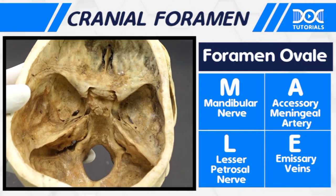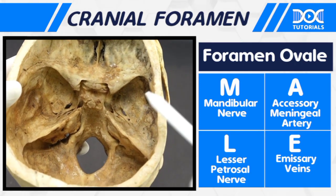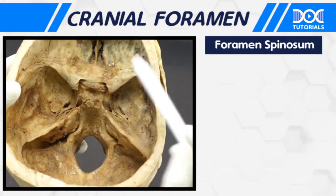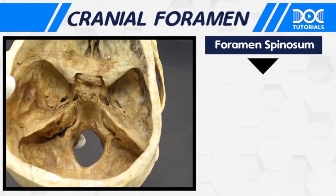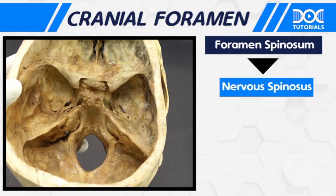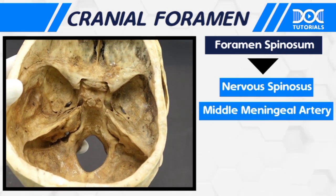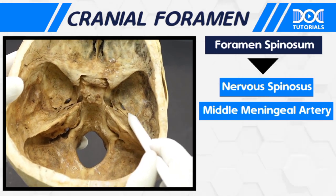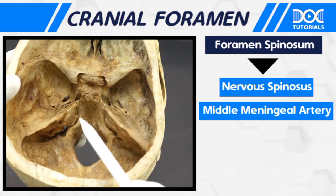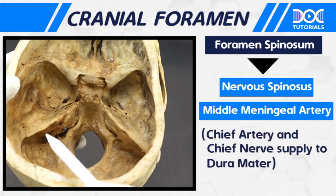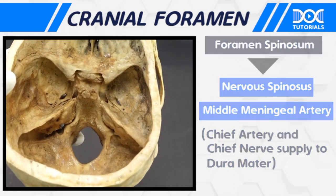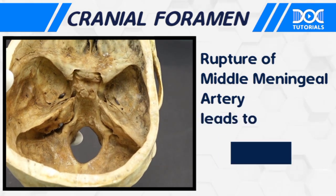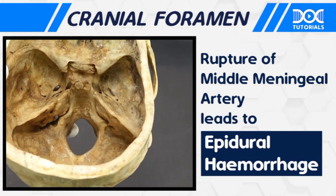So MALE structures pass through the foramen ovale. Just behind it you are able to appreciate one more foramen — the foramen spinosum — and from there the nervus spinosus along with the middle meningeal artery pass through. This is extremely important because nervus spinosus and the middle meningeal artery are the chief nerve and artery supply to the dura mater, and rupture of the middle meningeal artery leads to epidural hemorrhage.